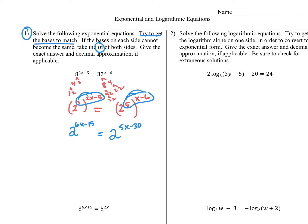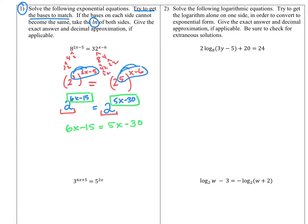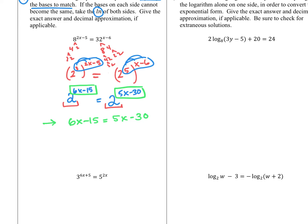Now that the bases match, because exponential functions are one-to-one, we know that if those outputs are equal, then the inputs were equal. That means 6x minus 15 has to equal 5x minus 30. We started with an exponential equation, and now we're looking at a linear equation. Moving the x terms to one side: 6x minus 5x is just x, so x minus 15 equals negative 30. Adding 15 to both sides gives us x equals negative 15.